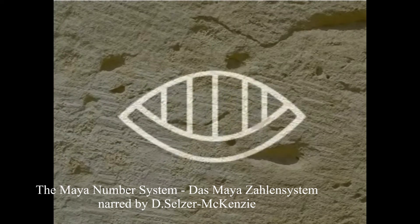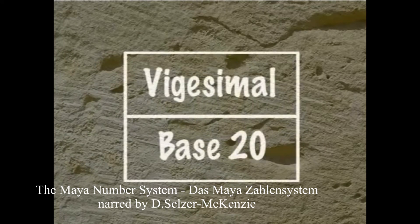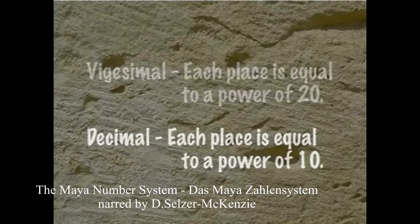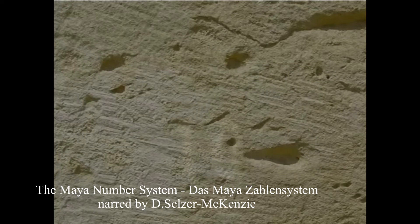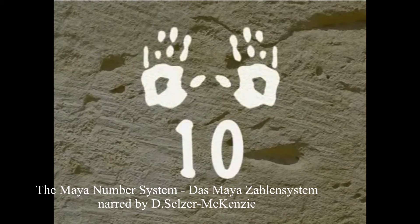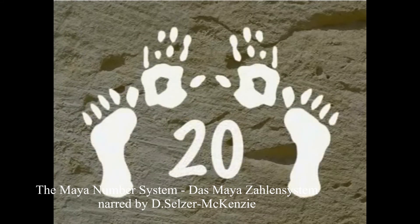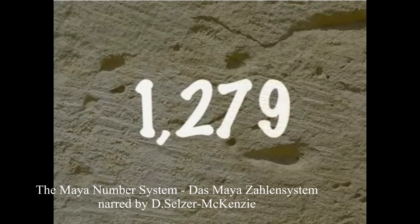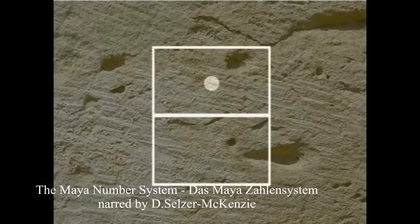This idea of place value applies to the Maya number system along with the concept of 0, but the Maya used a vigesimal system, or base 20. This means that each place is equal to a power of 20. In our system, each place is equal to a power of 10. Many scholars believe our system was designed as base 10 simply because 10 equals the number of our fingers, while the Maya chose base 20 because 20 equals the combined total of fingers and toes. And while we write numbers with increasing place value from right to left, the Maya wrote their numbers to show increasing place value from bottom to top.